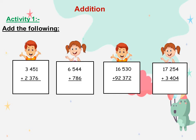At first, the first step we do: ones, tens, hundreds, and thousands. Ones with ones, tens with tens, hundreds with hundreds, thousands with thousands.